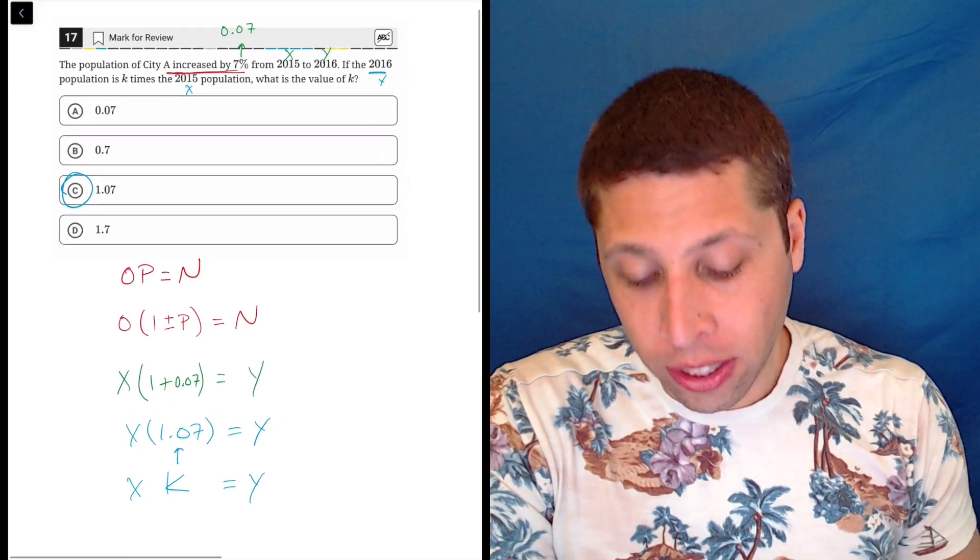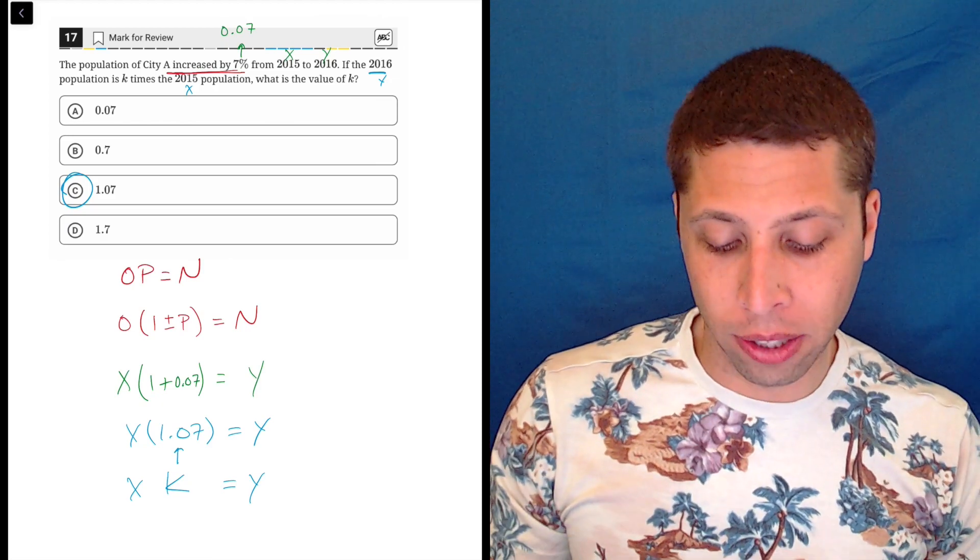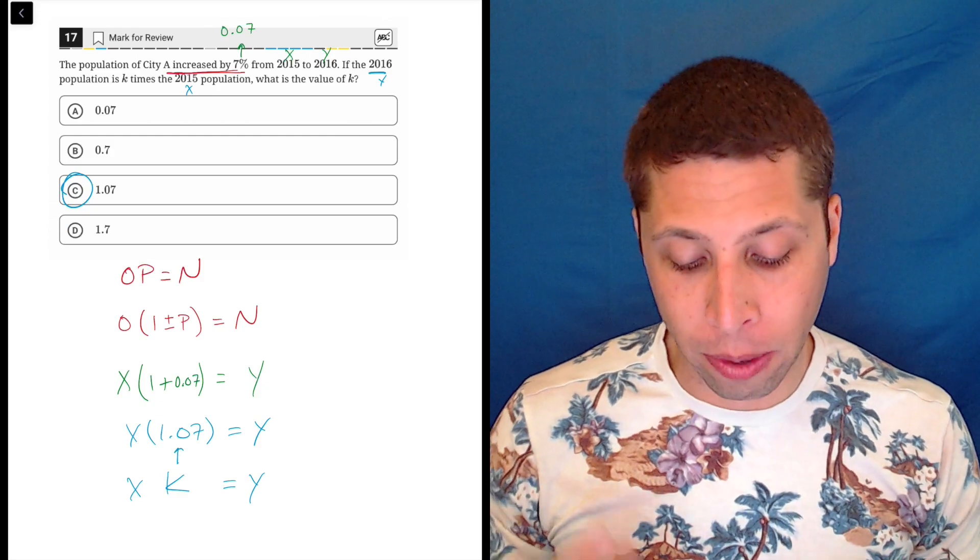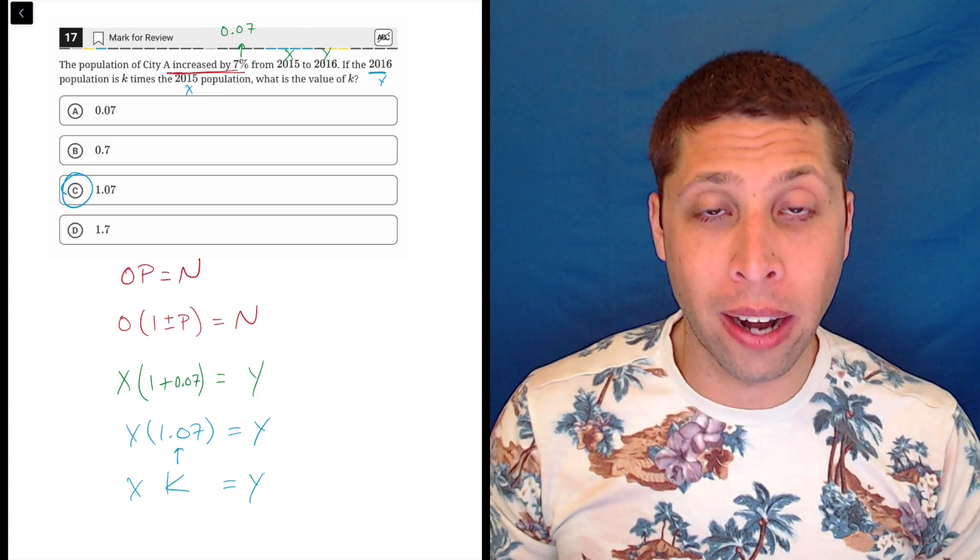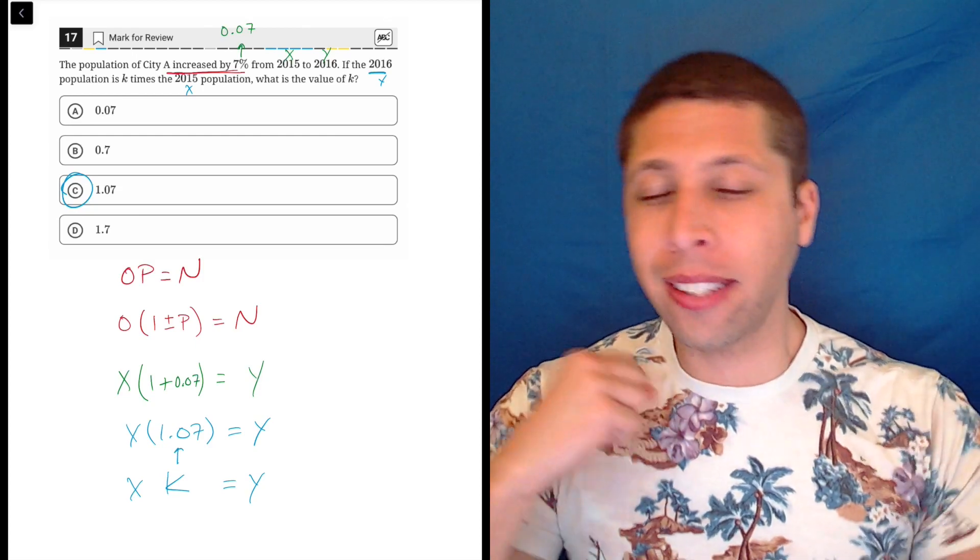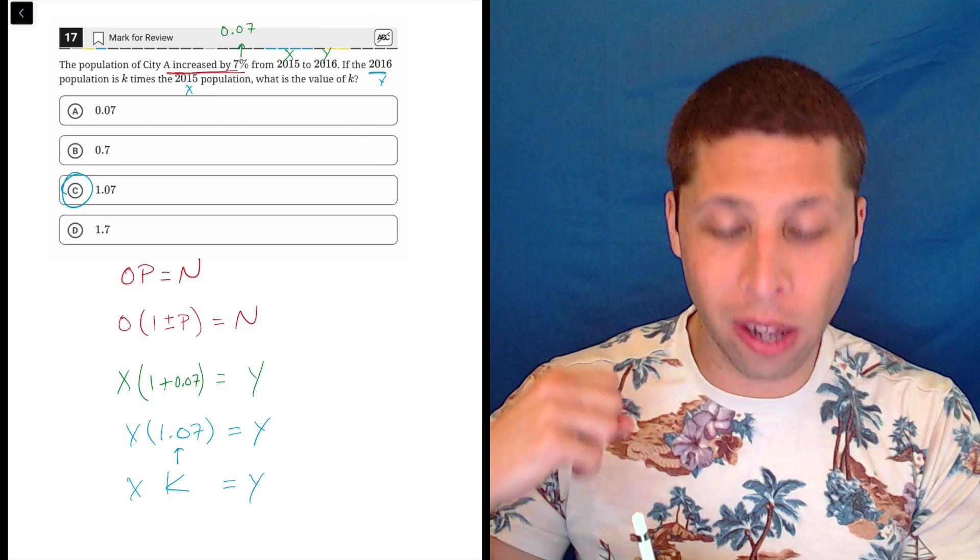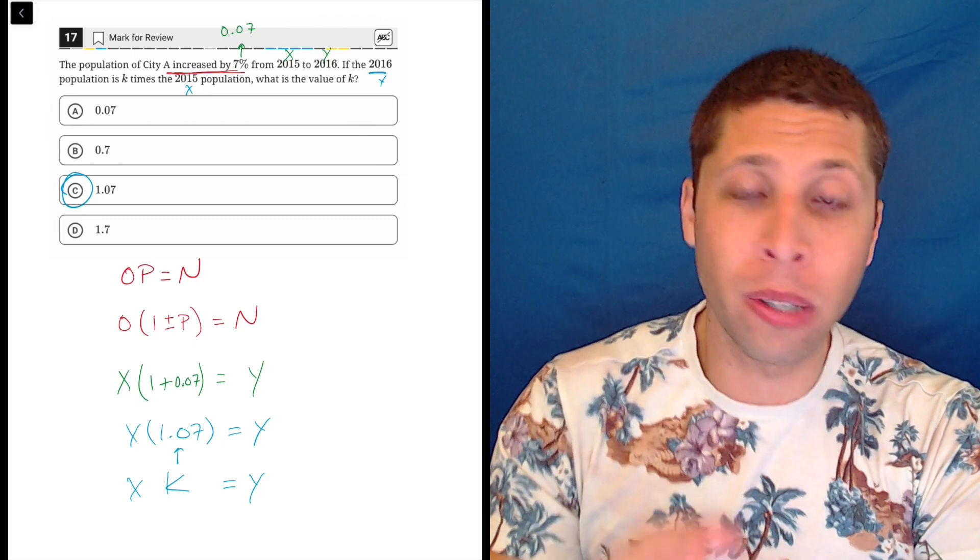That is very standard for how percentages are going to get worked into SAT questions. And it's a little different than how we talk about them. I mean, this is a good example of that. The question is talking about it as a 7% increase. And yet through mathematics, that kind of gets twisted into this, well, multiplying by 1.07. For some of you, again, this is very intuitive and understandable.